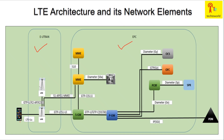Now let's talk about the interfaces. The interface between the UE and the eNodeB is Uu. The interface between two eNodeBs is X2, and the protocol used over X2 is the X2AP protocol. The interface between two MMEs is S10, and the interface between the eNodeB and the MME is S1, using the S1AP protocol.